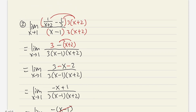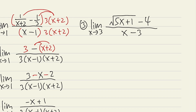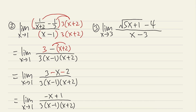Let's take a look at another example — number 3. This is the limit as x approaching 3, a very common type involving a square root. We have square root of (5x plus 1) minus 4, all over x minus 3. When we plug in 3, we get 0 over 0. And since x is approaching 3, you can expect the x minus 3 factor to be cancelled somehow. We will use the conjugate to handle this.